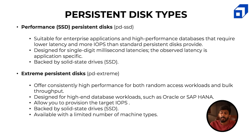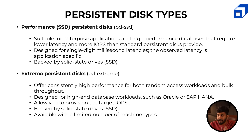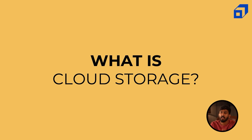Extreme persistent disks are designed for high-end database workloads such as Oracle or SAP HANA. They allow you to provision the target IOPS and select how much throughput you need, and are also backed by SSD. One important note: extreme persistent disks are only available for a limited number of machine types — the most basic virtual machines can't use them, and there's no need for them in that case. So those are the four different types of persistent disks available in GCP.